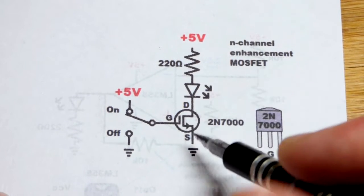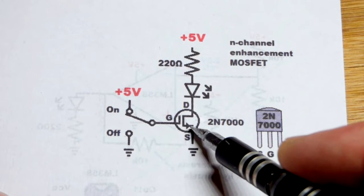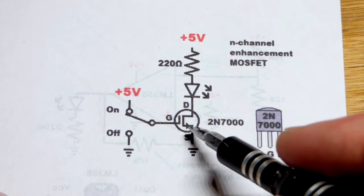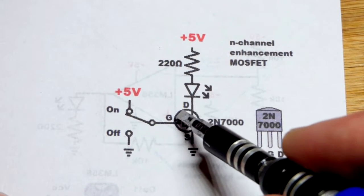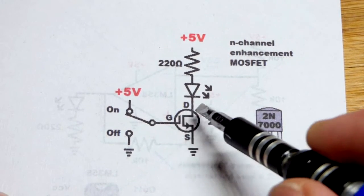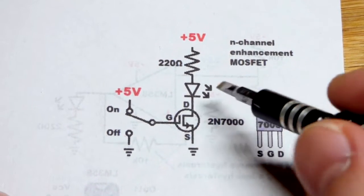For the N channel though, the arrow is pointing away from the channel. And the P channel, the arrow will be pointing towards the channel. You notice we have a gap between the gate and the drain. They don't always circle it either. Be aware of that.